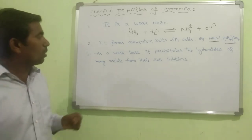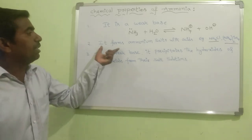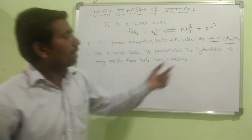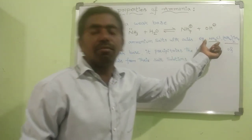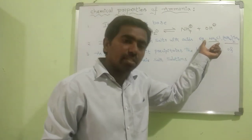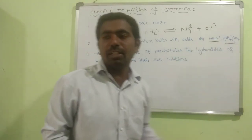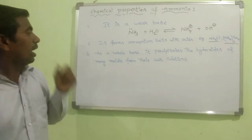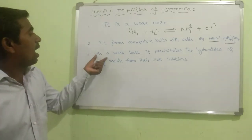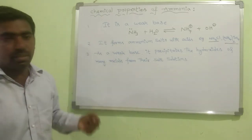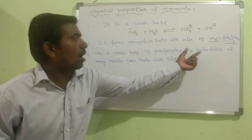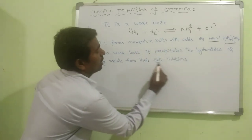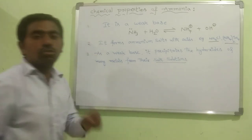The second chemical property: ammonia forms ammonium salts with acids. For example, ammonium chloride with HCl, and ammonium sulphate with sulfuric acid. The third chemical property: as a weak base, it precipitates the hydroxides of many metals from their salt solutions.